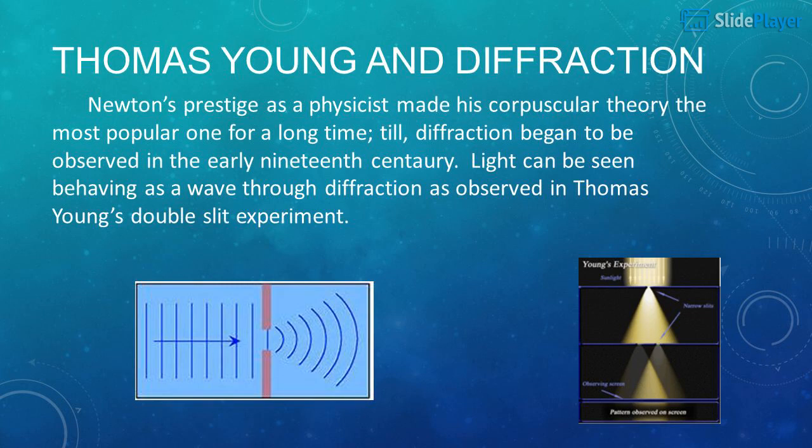Thomas Young and Diffraction. Newton's prestige as a physicist made his corpuscular theory the most popular one for a long time, until diffraction began to be observed in the early 19th century. Light can be seen behaving as a wave through diffraction, as observed in Thomas Young's double-slit experiment.